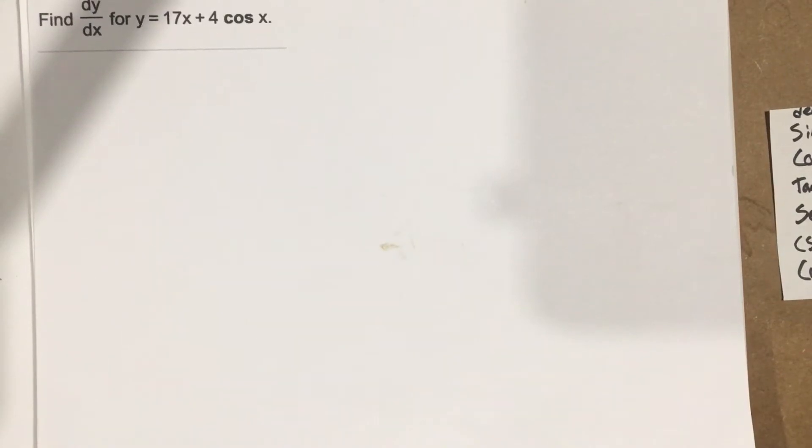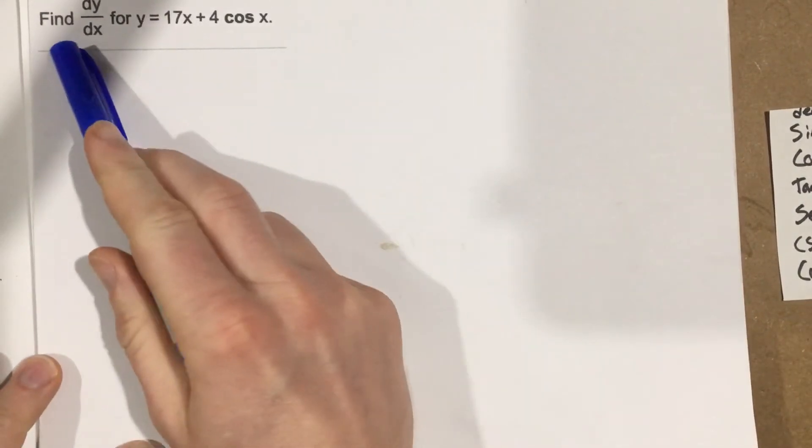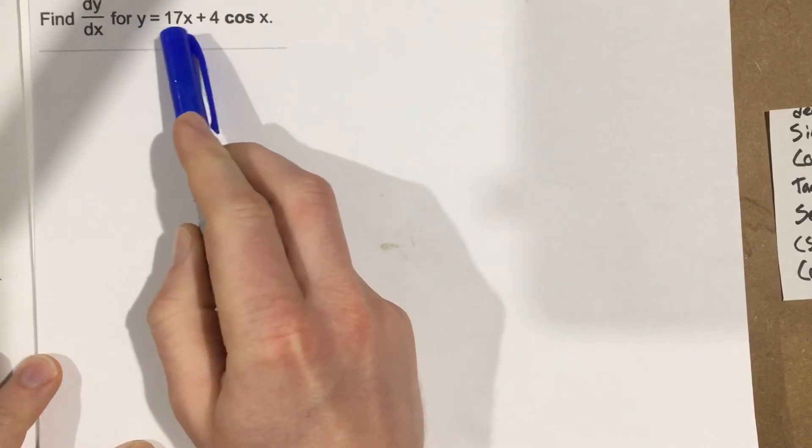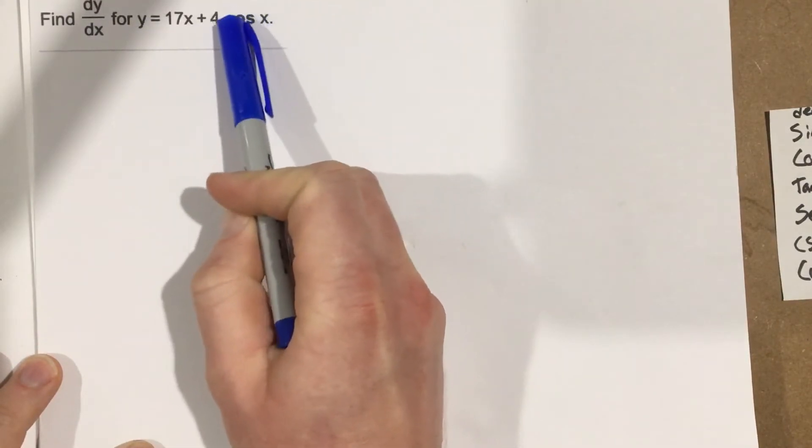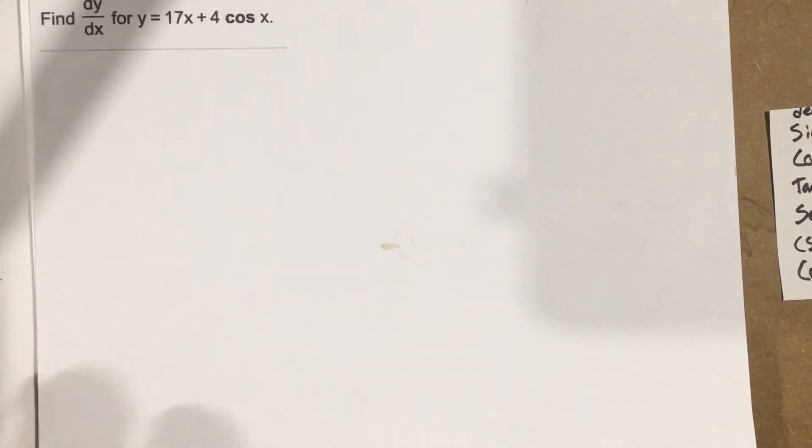This is problem number one from section 3.5. In this problem, we need to find the derivative for y equals 17x plus 4 cosine x. As you can see here, we have a trigonometric function that we're trying to take the derivative of.